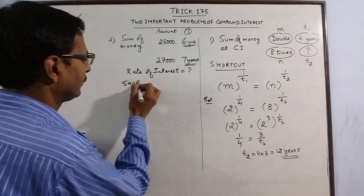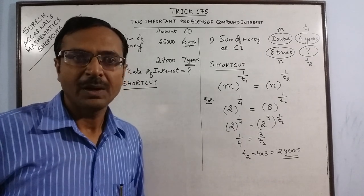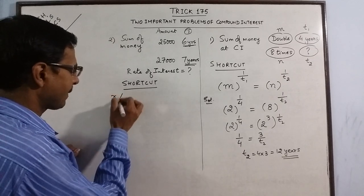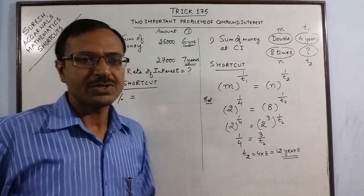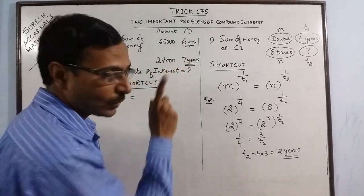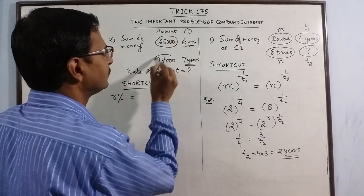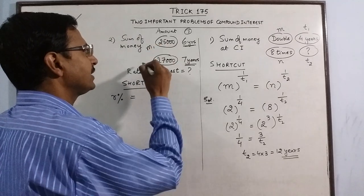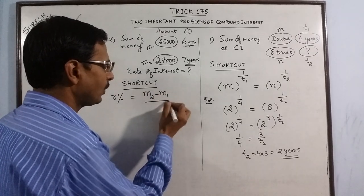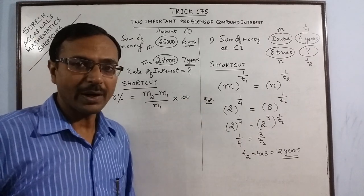By the traditional method you would come up with two equations which you have to solve to get the rate of interest. But through the shortcut it takes just 4 to 5 seconds. The rate percent R is found as follows: just observe that the difference between the two times is one year and the method applies only to such questions. I need only these two amounts. Suppose the first amount is M1 and the second is M2. The formula is: difference of amounts upon the amount obtained in the first instance, multiplied by 100.